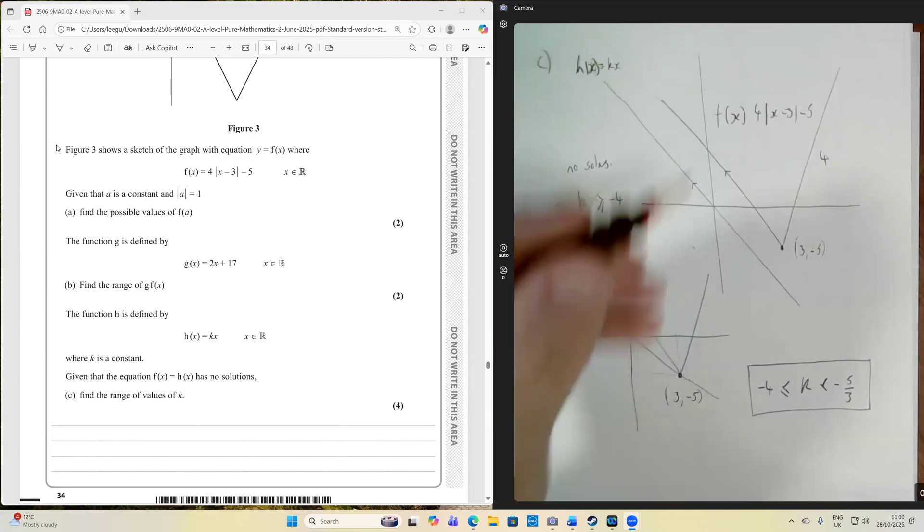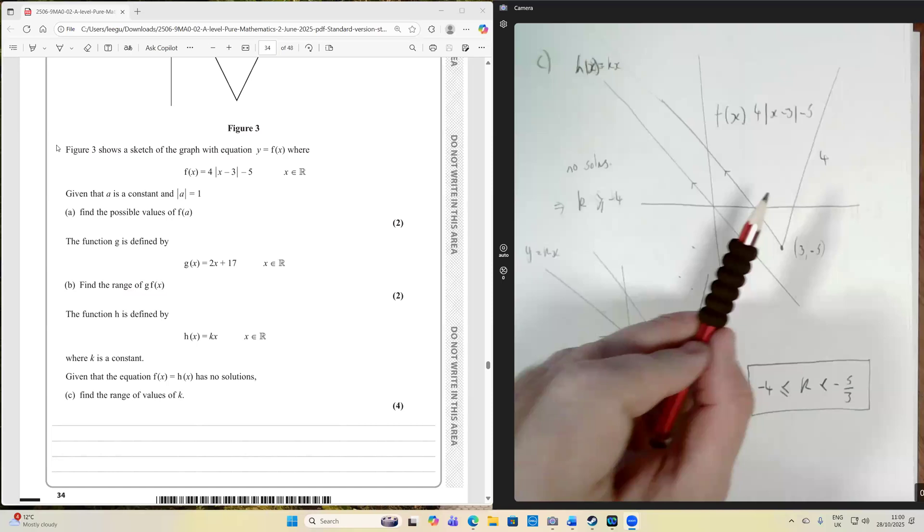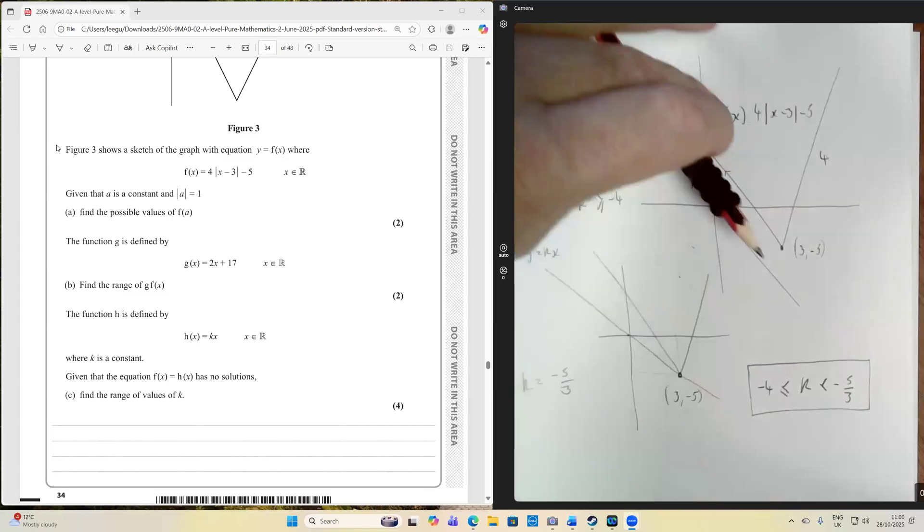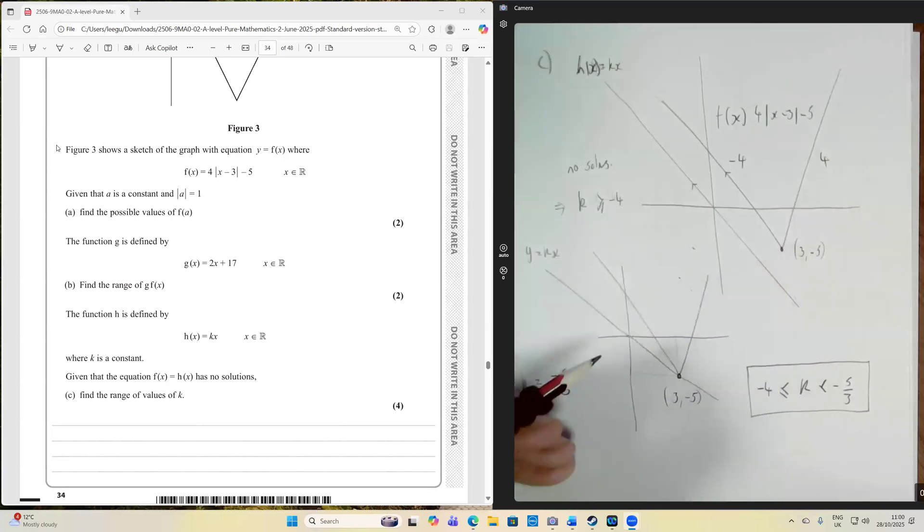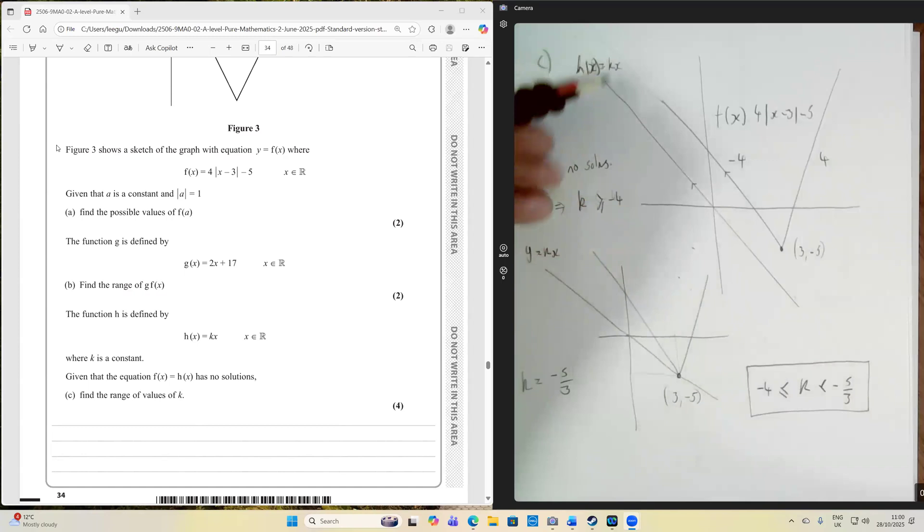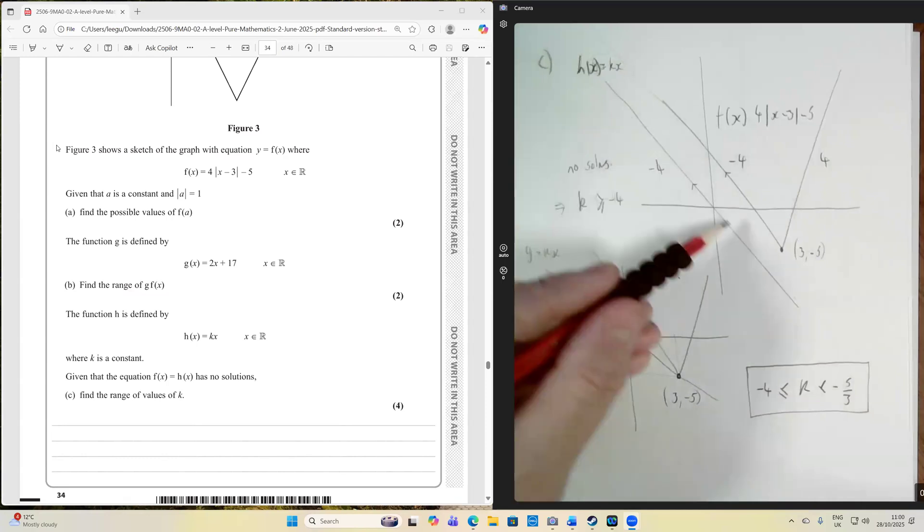So that was down there, and it got reflected up. So this has a gradient here of minus 4. So there are no solutions when h of x has a gradient of minus 4. In other words, when k equals minus 4, there are no solutions.